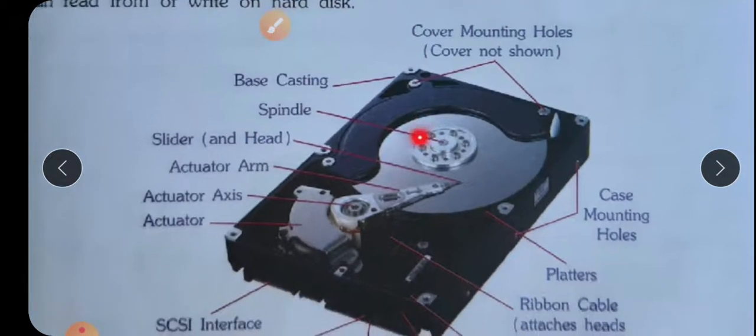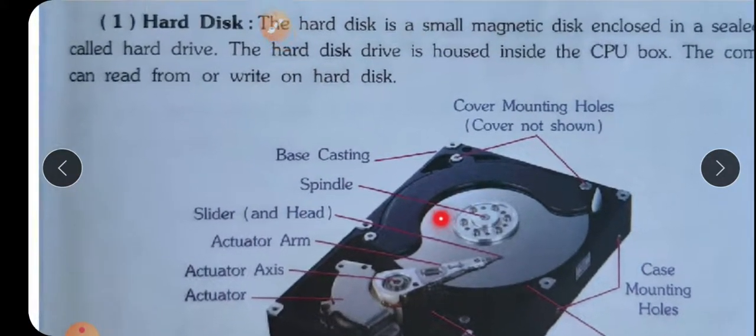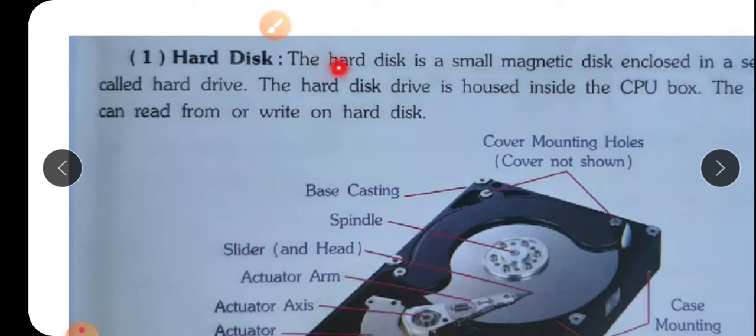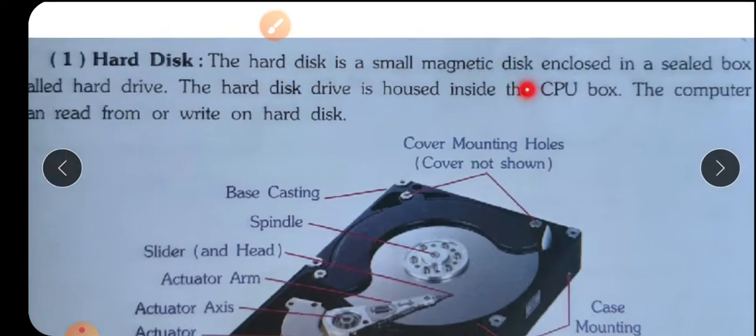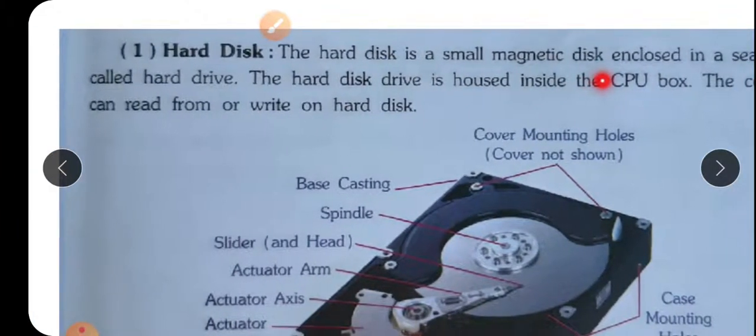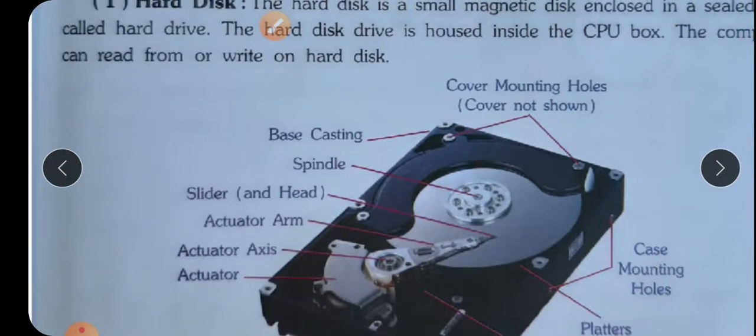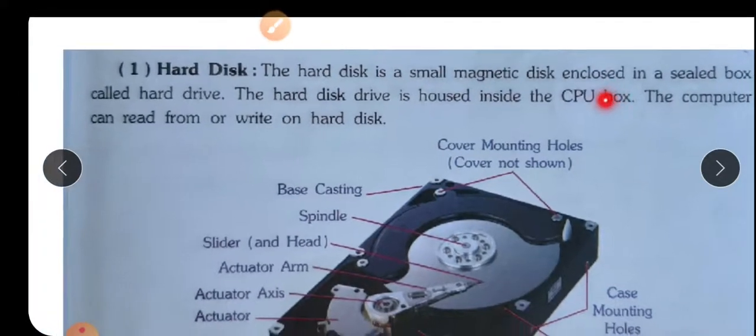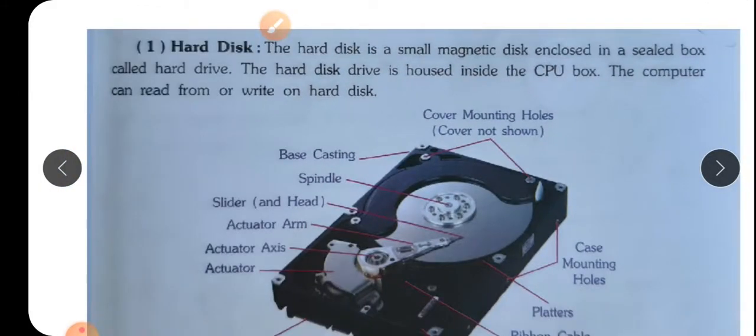Let's see the hard disk. यह hard disk का picture है, यह computer के CPU के अंदर रहता है. The hard disk is small magnetic disk enclosed in sealed box called hard drive. यह magnetic disk है और यह hard drive जैसे box रहती है, rectangular box रहती है, metal की और उसके अंदर mounted रहती है. The hard disk drive is housed inside the CPU box.